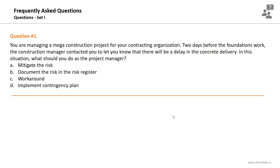Starting with Set 1, Question 1: You are managing a mega construction project. Two days before the foundations work, the construction manager contacted you to let you know that there will be a delay in the concrete delivery. In this situation, what should you do as the project manager? Options include: mitigate the risk, document the risk in the risk register, workaround, or implement a contingency plan.